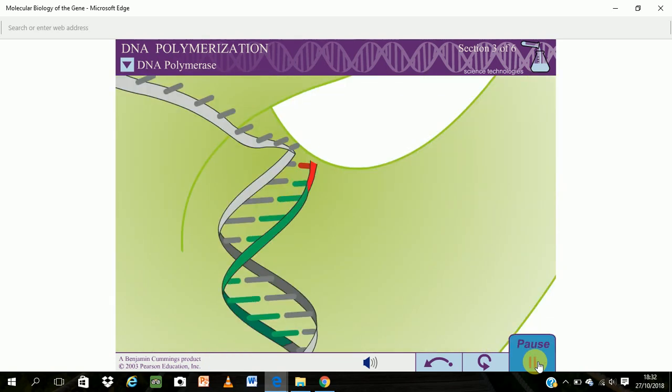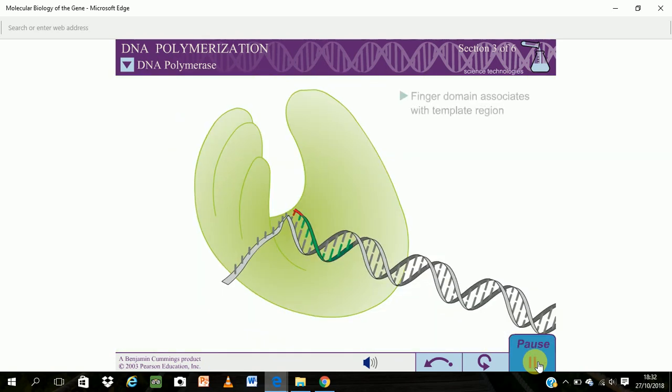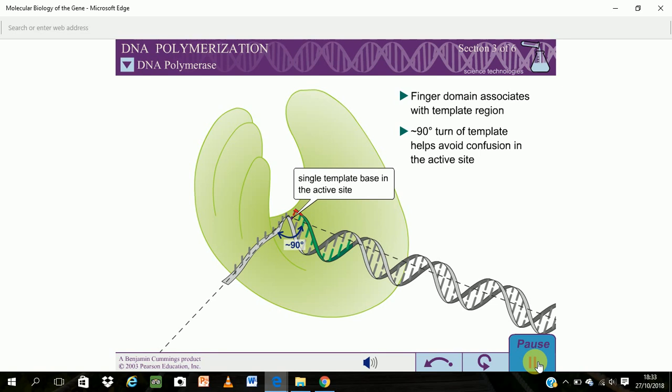The finger domain also plays a second role. The finger domain associates with the template region, leading to a nearly 90 degree turn of the phosphodiester backbone of the template immediately after the active site. This conformation of the template leaves only a single template base in the active site, preventing any confusion as to which base is ready to pair with the next nucleotide to be added.